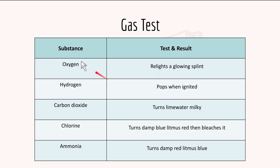Here's the gas test - the substance and how to test it. For oxygen, we use the relighting glowing splint test. You take a splint, light it up, then blow it out so that it's still glowing, and put the glowing splint over the test tube. If it relights, then oxygen is present.